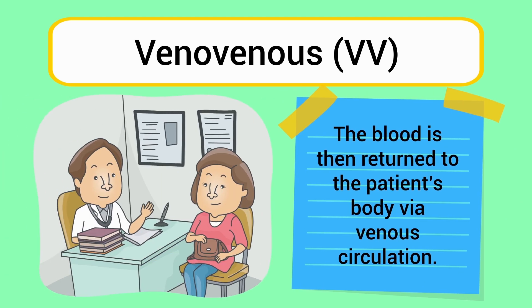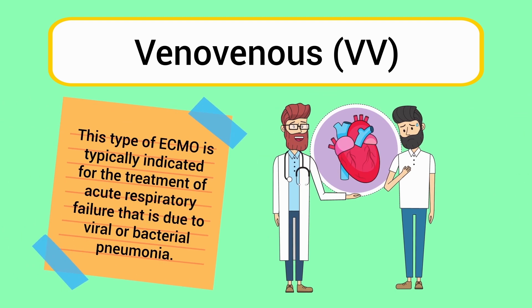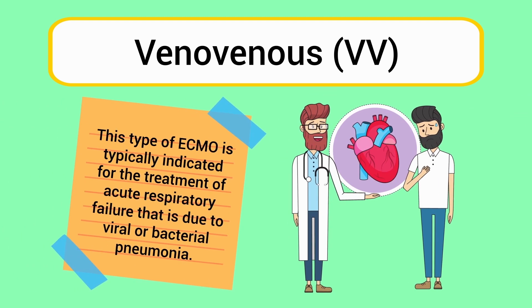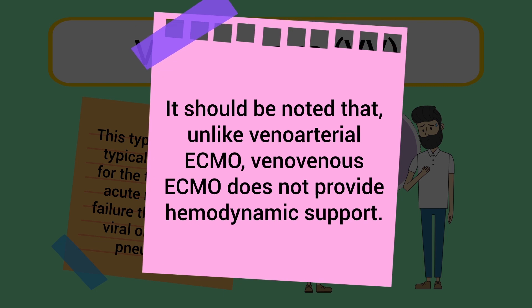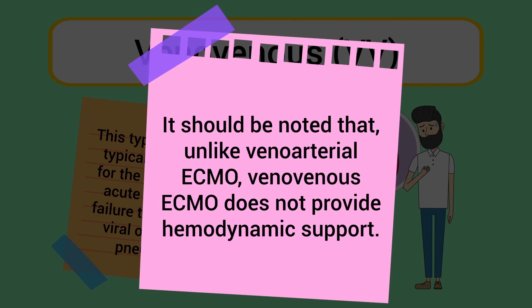The blood is then returned to the patient's body via venous circulation. This type of ECMO is typically indicated for the treatment of acute respiratory failure due to viral or bacterial pneumonia. It should be noted that unlike veno-arterial ECMO, veno-venous ECMO does not provide hemodynamic support.